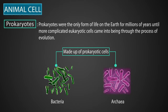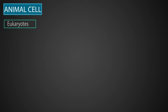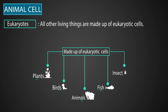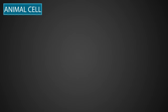Bacteria and archaea have prokaryotic cells, while all other living things — plants, birds, animals, fish, insects, rats, all types of plants — are made up of eukaryotic cells. Today, we will learn about an animal cell, which is a eukaryotic cell.